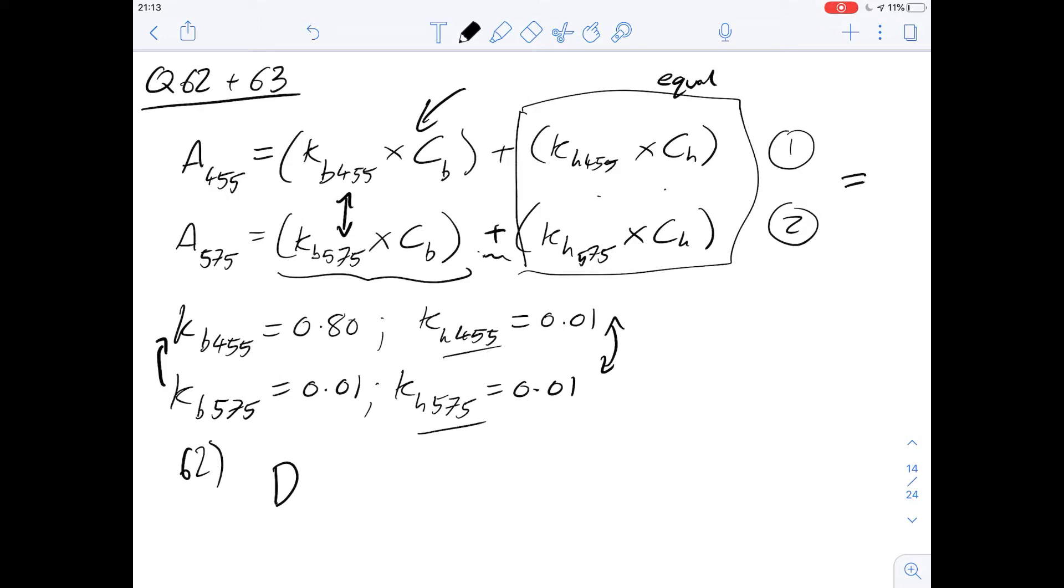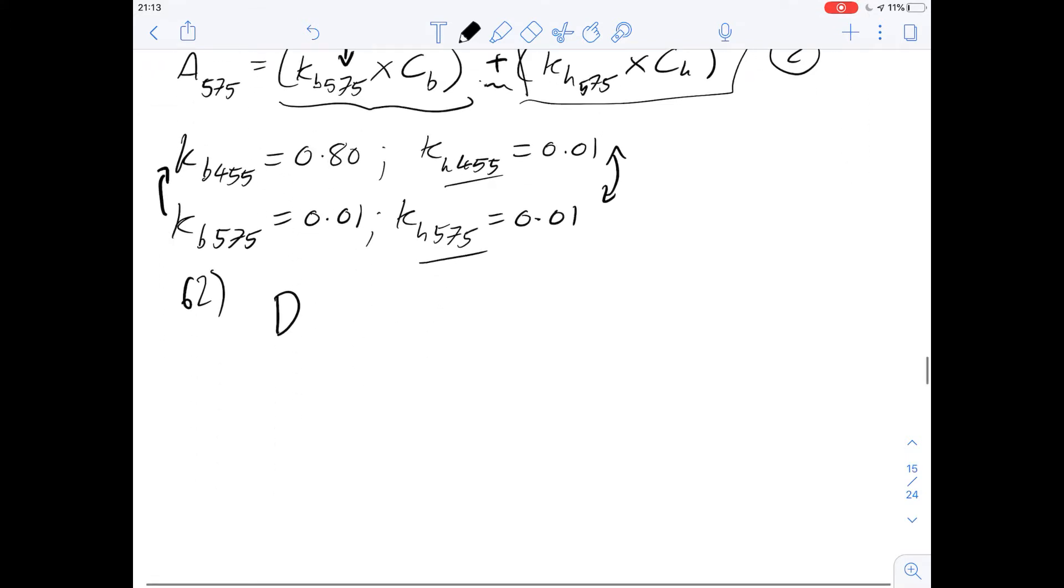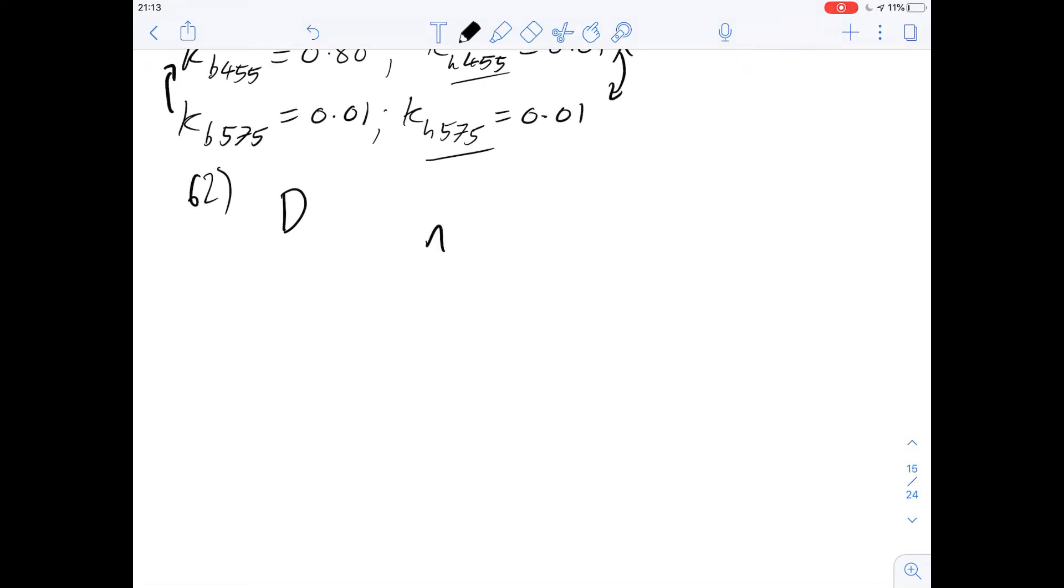63 then says, in order to determine the concentration of bilirubin, as well as measuring absorbance at 455 nanometers, the absorbance is measured at 575 nanometers. Why is that? Okay, well, we've got these two different substances in the same sample. And if I were to draw, just we'll say this is wavelength and absorbance at 455. And I'm just going to make up some of the numbers just to demonstrate why.